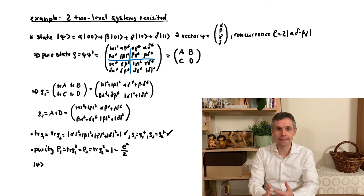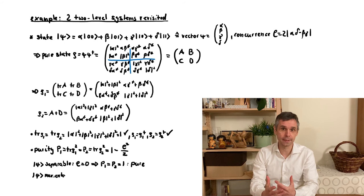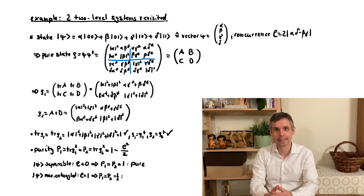First of all, this replicates that if the concurrence vanishes so that we have a separable state, the purity of these reduced density matrices is 1, just as we have established in the general case. This is the unique situation where we can still assign individual states to the two different parts of the system. In contrast, if the concurrence is equal to 1, so when we have a maximally entangled state, such as a Bell pair, then the purity is equal to 1/2. This is indeed the smallest value that the purity can take for each of these two level systems, so we are in a maximally mixed state, where each of these reduced density matrices is just 1/2 times the identity matrix.